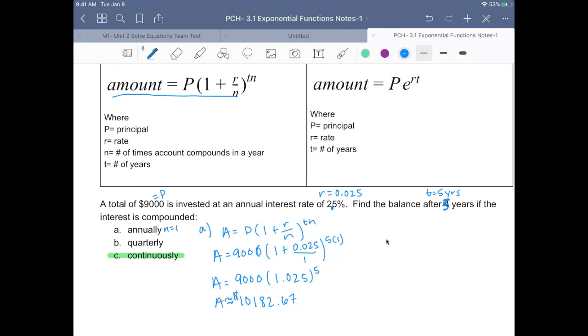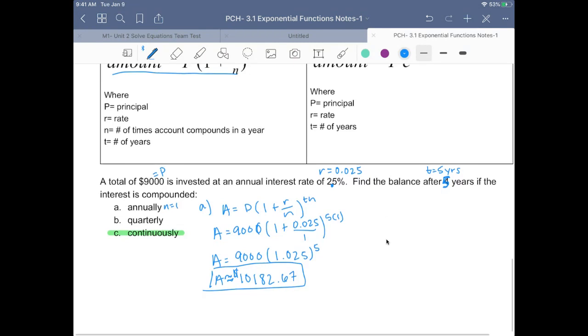So with just letting our money sit for 5 years in an account, you'll earn a little bit more than $1,000. That's pretty cool.